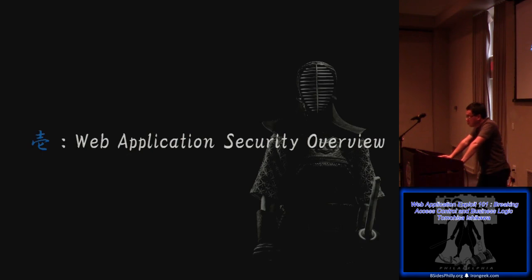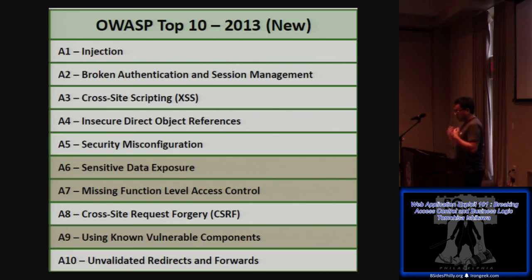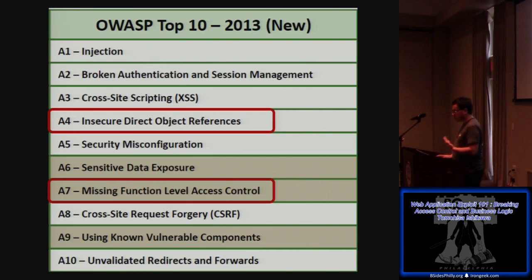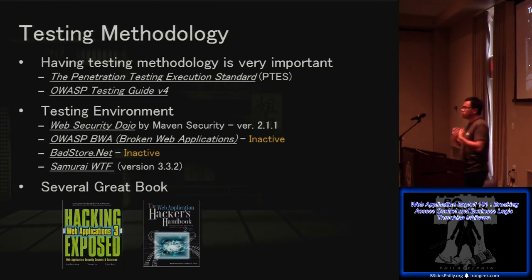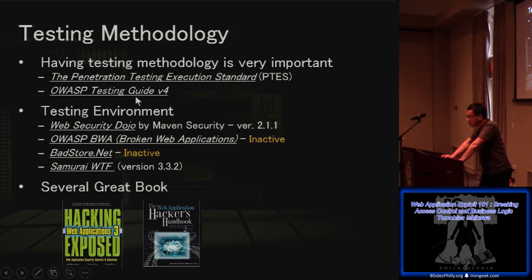Let's look at Web Application Security Overview. When considering web application vulnerabilities, there are many, such as SQL injection or cross-site scripting. The OWASP Top 10 is a great resource for understanding what kinds of vulnerabilities exist. We focus on access control and business logic, classified as A4 and A7. In terms of testing methodology, if you're starting penetration testing in your company, I strongly recommend having a testing methodology to maintain consistency. Good resources include the Penetration Testing Execution Standard and the OWASP Testing Guide.